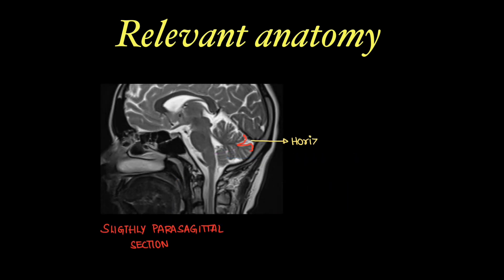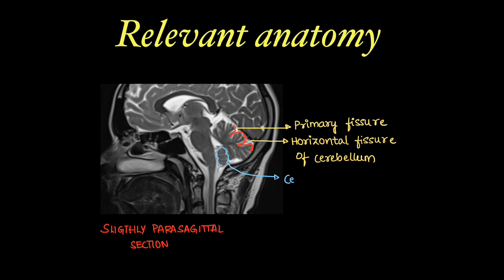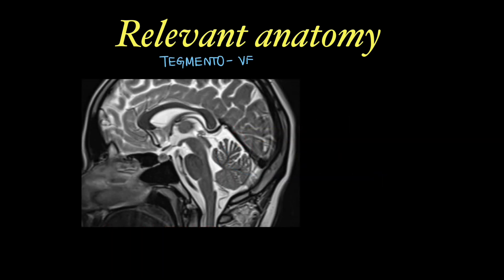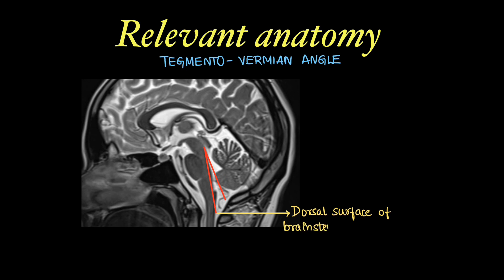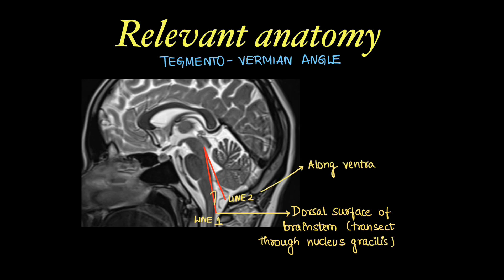Moving on to slightly parasagittal sections, this is the horizontal fissure of the cerebellum just beneath the primary fissure, and we can see the cerebellar tonsils. In suspected cases of posterior fossa anomalies, we calculate an angle called the tegmento-vermian angle. The angle is calculated between two lines: the first line is drawn along the dorsal surface of the brainstem transecting through the nucleus gracilis, and the second line is drawn along the ventral surface of the vermis.